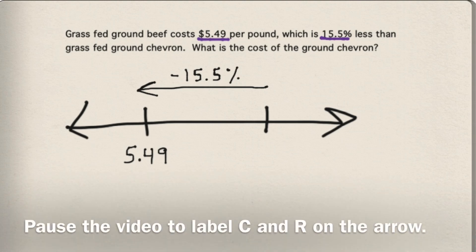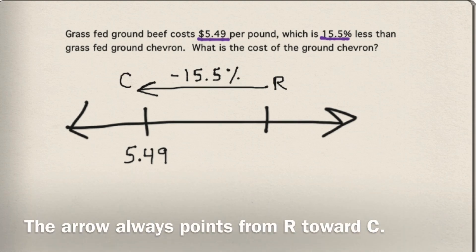Pause the video to label c and r on the arrow. The arrow always points from r toward c.